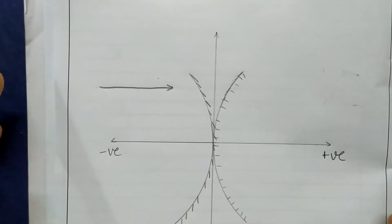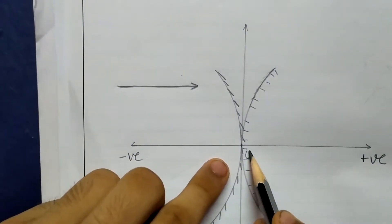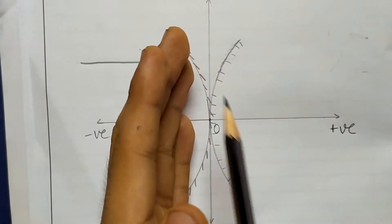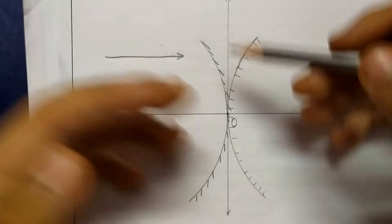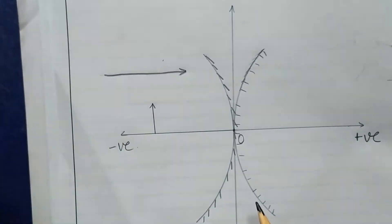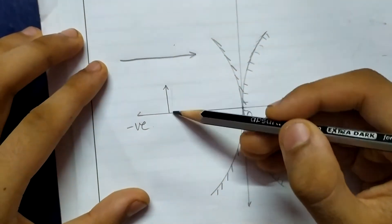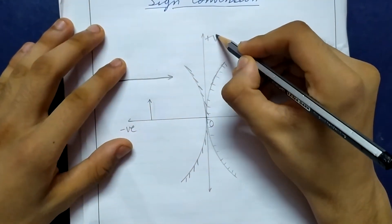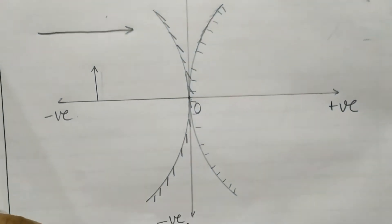In order to apply this, we imagine the pole of the mirror to be placed at the origin of a Cartesian plane. We put the mirror on a graph and call the pole our origin. For heights, the convention is that all distances above the principal axis — for example the height of the object — are considered positive, and all directions below the principal axis are considered negative.